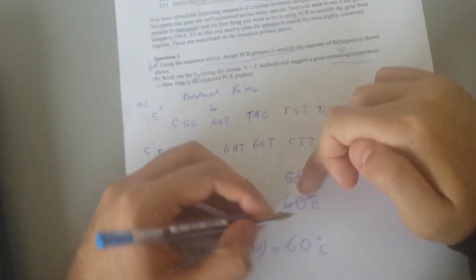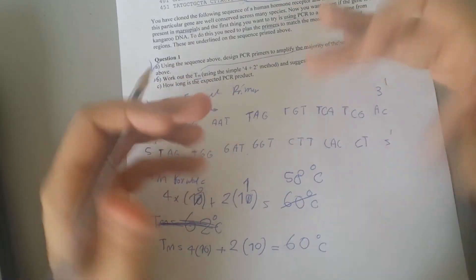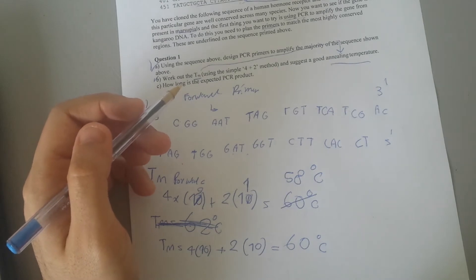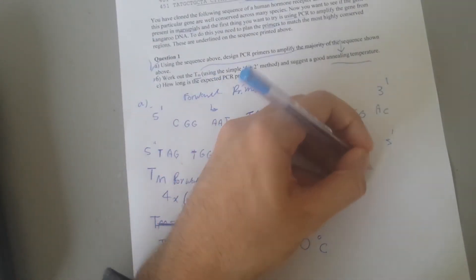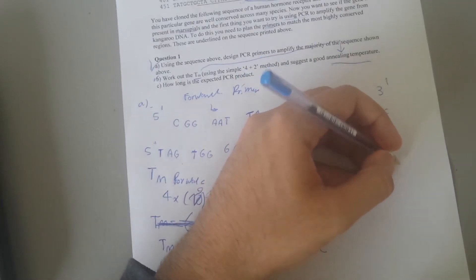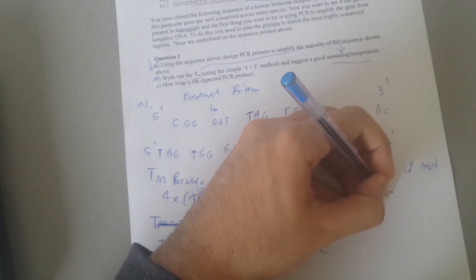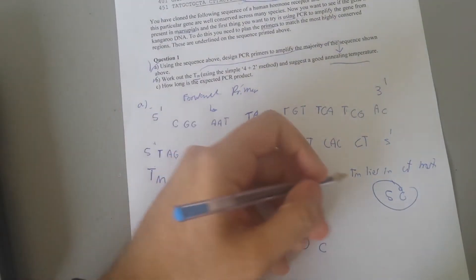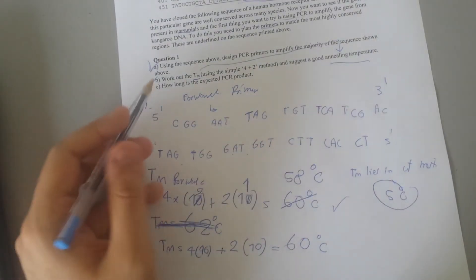Here's the thing, if you choose a primer you must make sure that the TM does not vary a lot. Usually two degrees difference is okay, but if it's more than five you should never do it because it would decrease the specificity. We want to make sure that the TM lies at most five degrees Celsius difference.